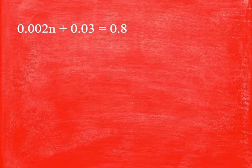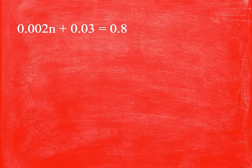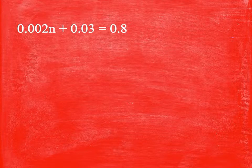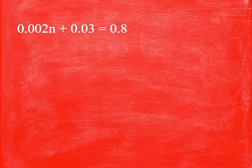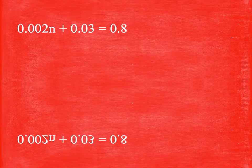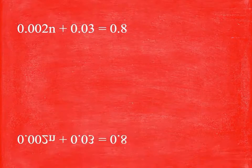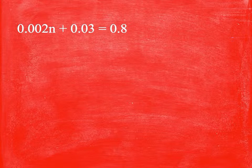This works because of the property of equality. I'm multiplying both sides by the same number. Now 1,000 times 0.002n is just 2n. Move that decimal over three times. Here I need to move it over three times as well, that gives me 30. And if I move it over three times here, that gives me 800.